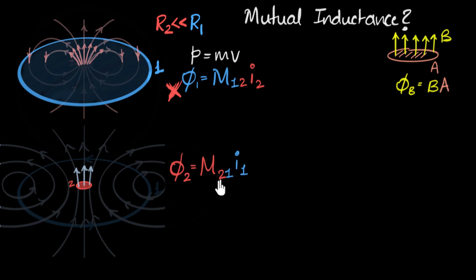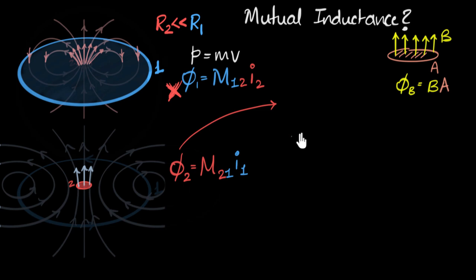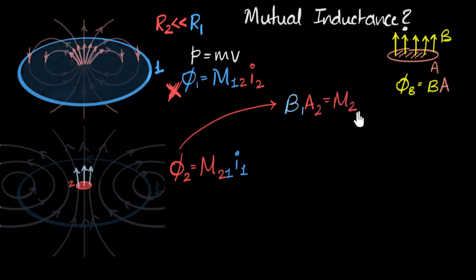So it's very easy to calculate the flux as magnetic field times area. Pause and try calculating the flux yourself. Let's proceed: flux equals B times A. The magnetic field B1 is generated by the outer coil, and the area A2 is the area of the tiny inner coil. So: B1 times A2 equals M21 times I1.